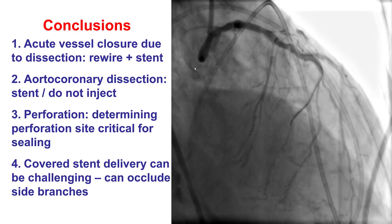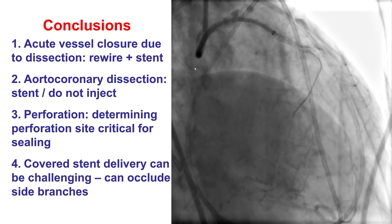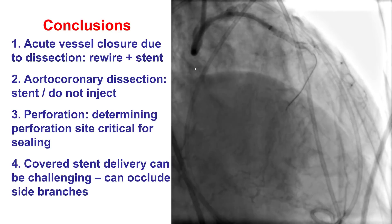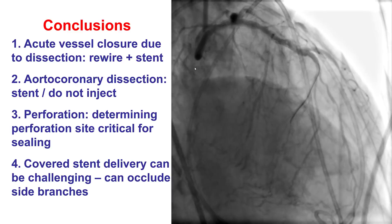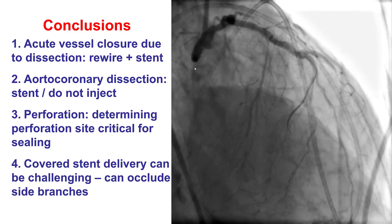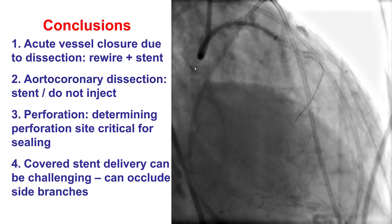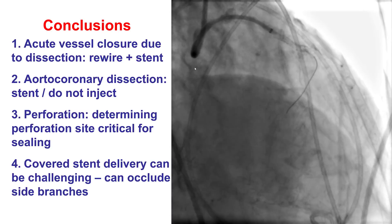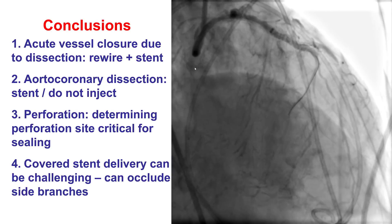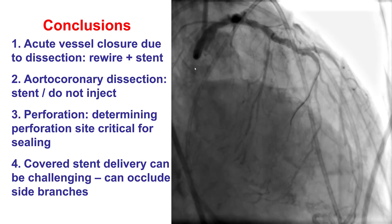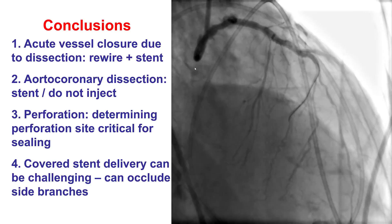There are multiple lessons from this case. First, there is only so much capacity for a patient to overcome complications and adverse events; when multiple adverse events occur, the margin for achieving recovery becomes low. Second, regarding acute vessel closure — we knew it was a complex lesion, used a microcatheter upfront with a workhorse guidewire, yet the patient still had acute vessel closure. When that happens, the first step is to get a guidewire through and place a stent, since in most cases acute vessel closure during wire attempts is due to dissection.